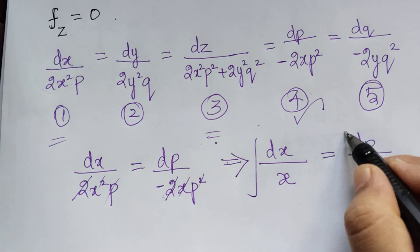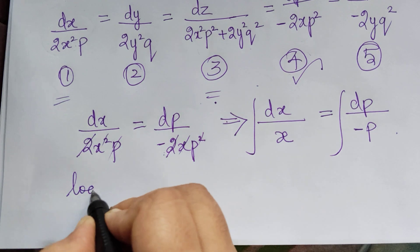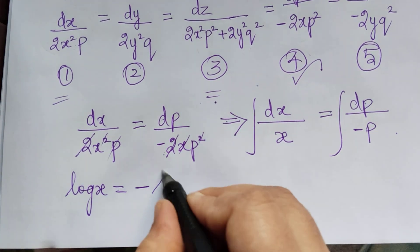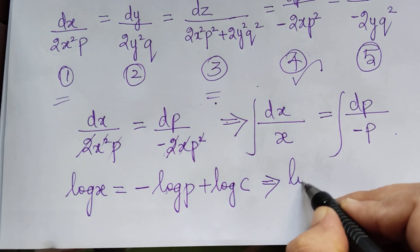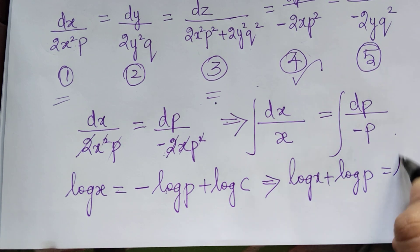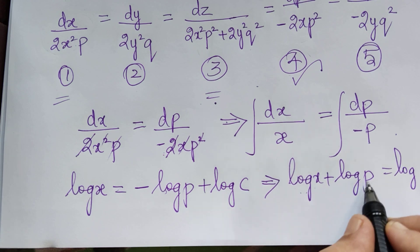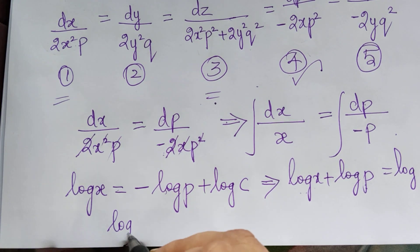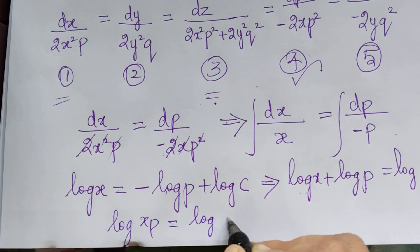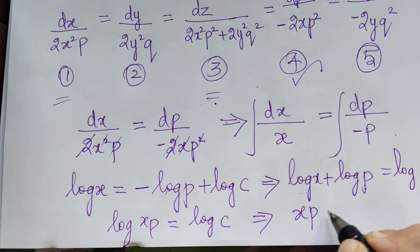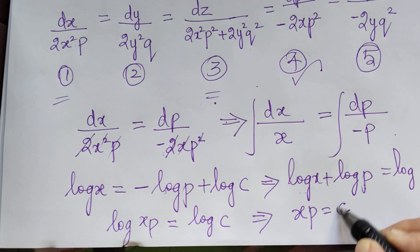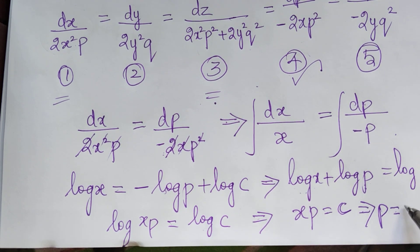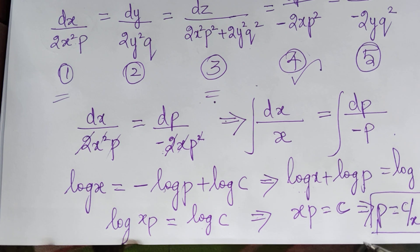Integrating both sides: ∫dx/x = −∫dp/p, which gives log x = −log p + log c. Bringing log p to the left: log x + log p = log c, so log(xp) = log c. Therefore xp = c, and we get p = c/x.